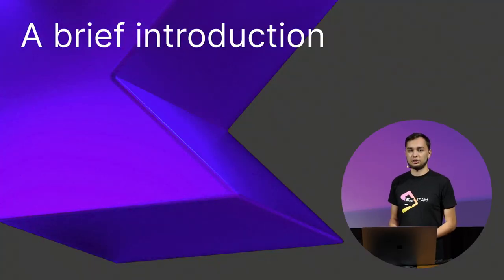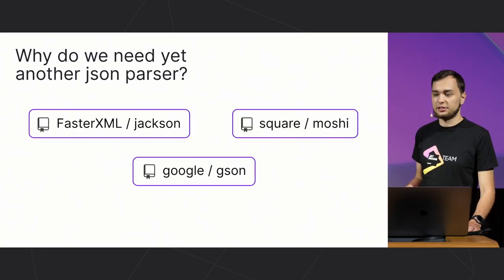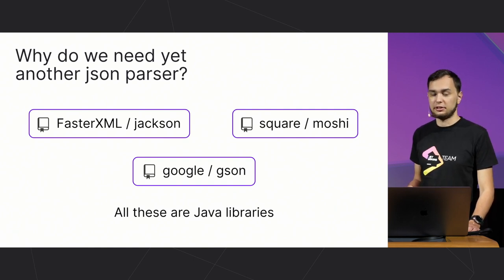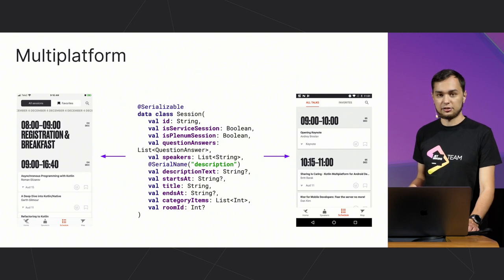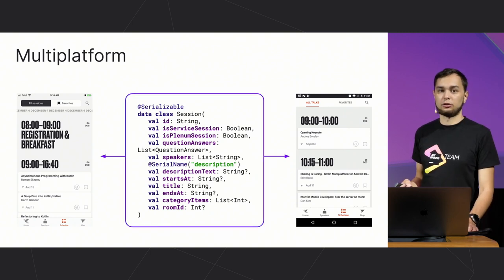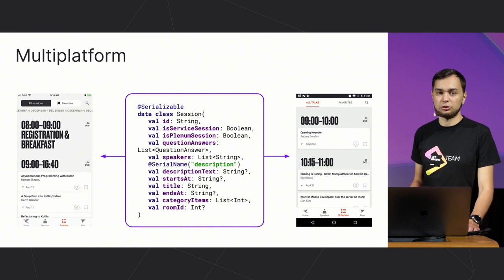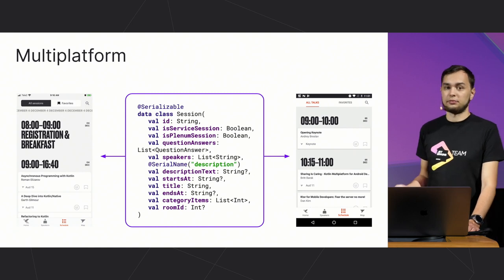Let's start with a brief introduction. You may ask why we need yet another JSON parser for Kotlin if we already have libraries like Jackson, Moshi, Gson and so on. All these libraries are Java libraries, so they may not work well with Kotlin in certain ways. Kotlinx Serialization is a multiplatform library — it supports Kotlin-JVM, Kotlin-JS and Kotlin-Native. So you can use your serializable model in common code on Android, on iOS, and in your backend server.